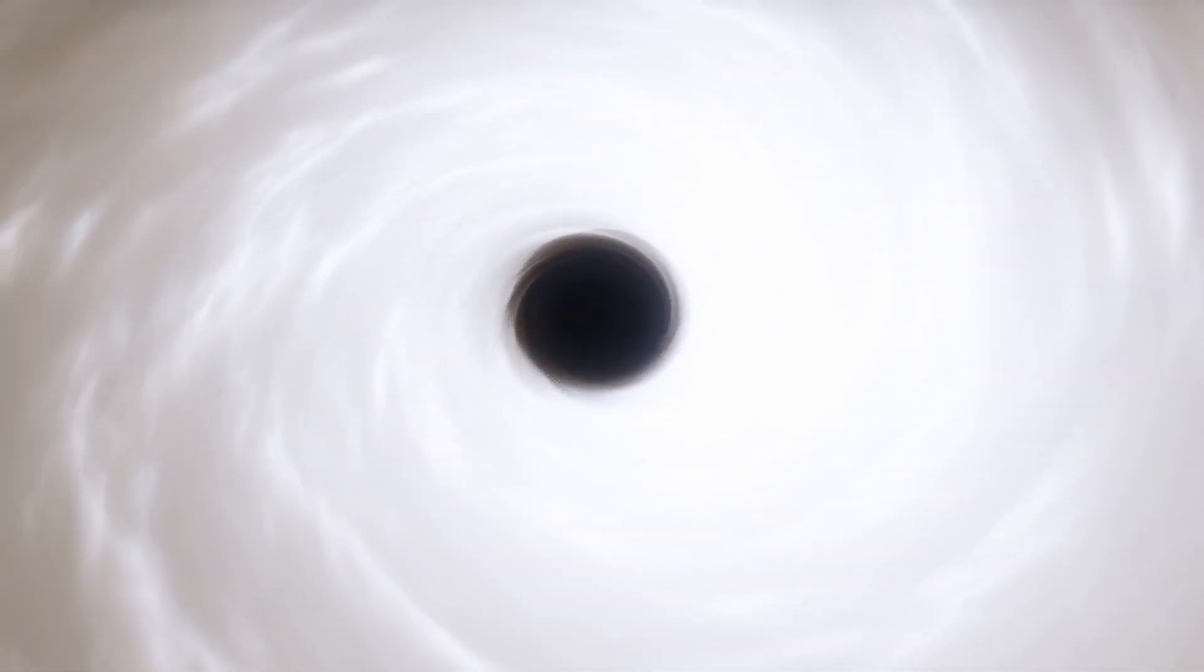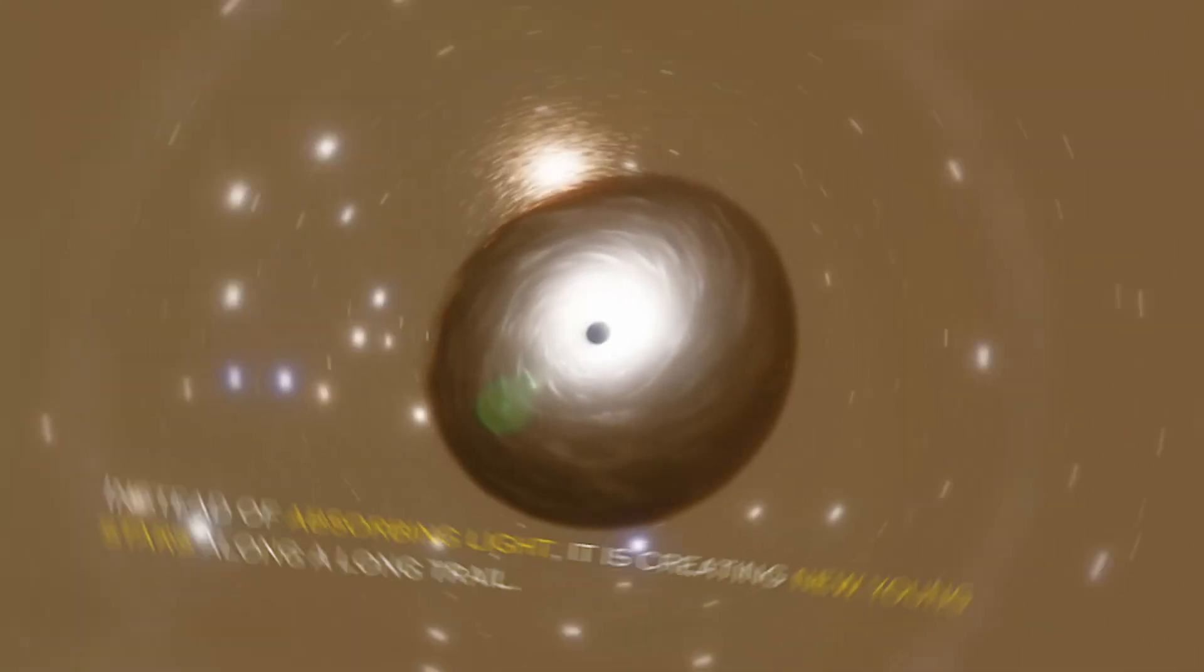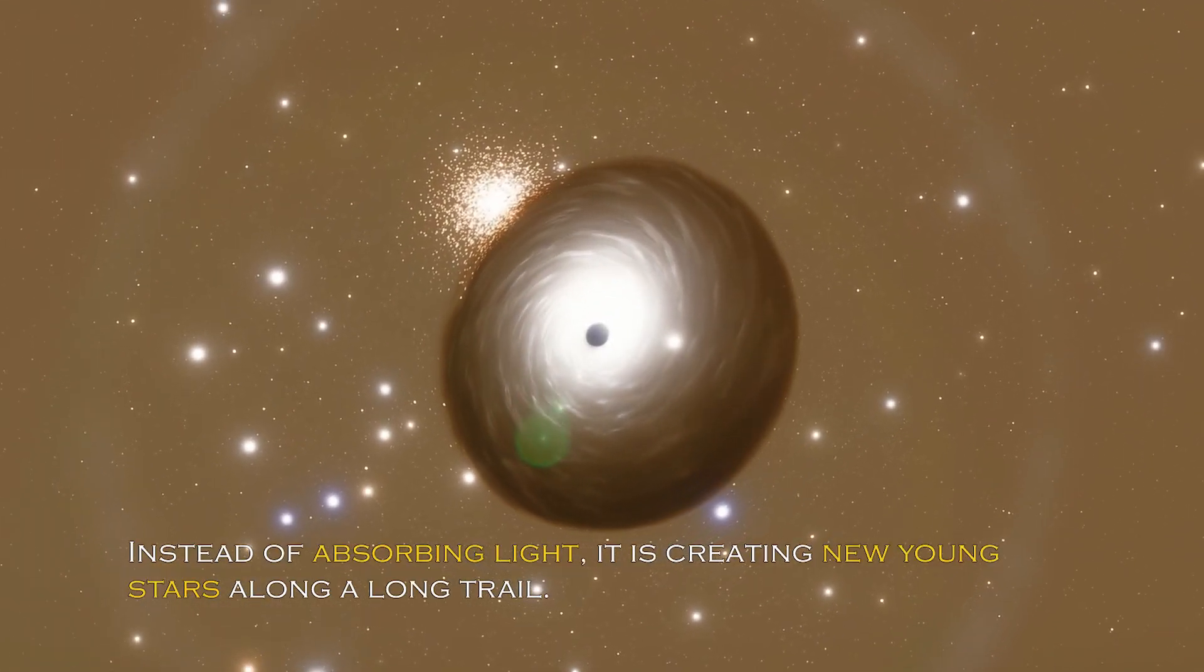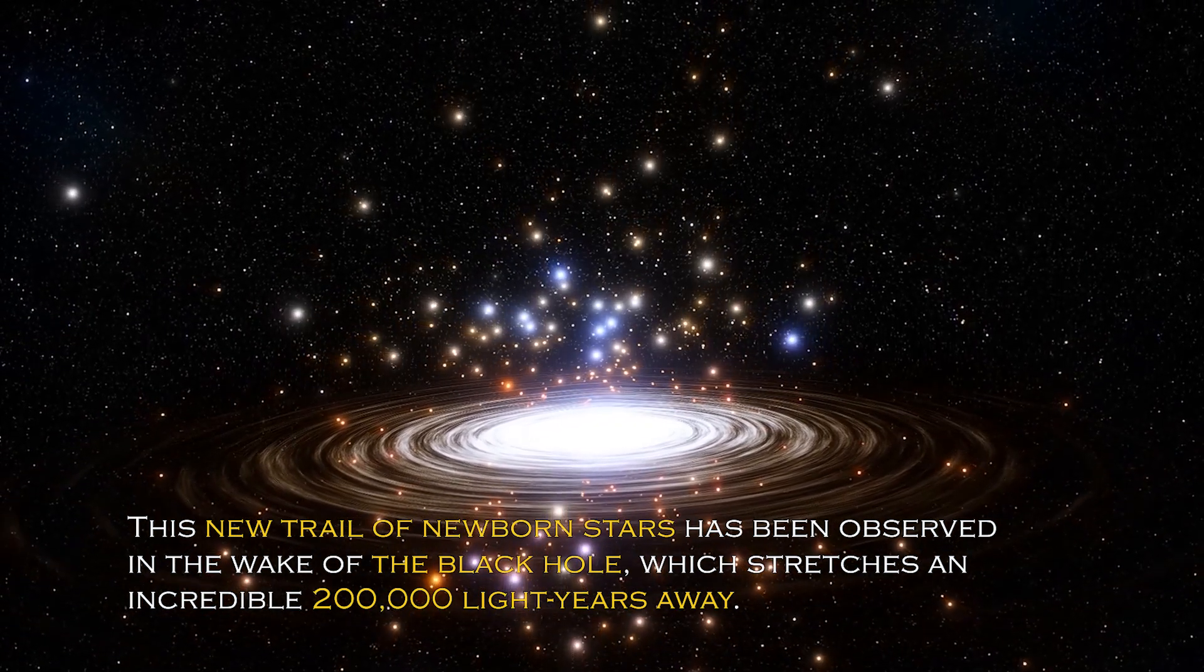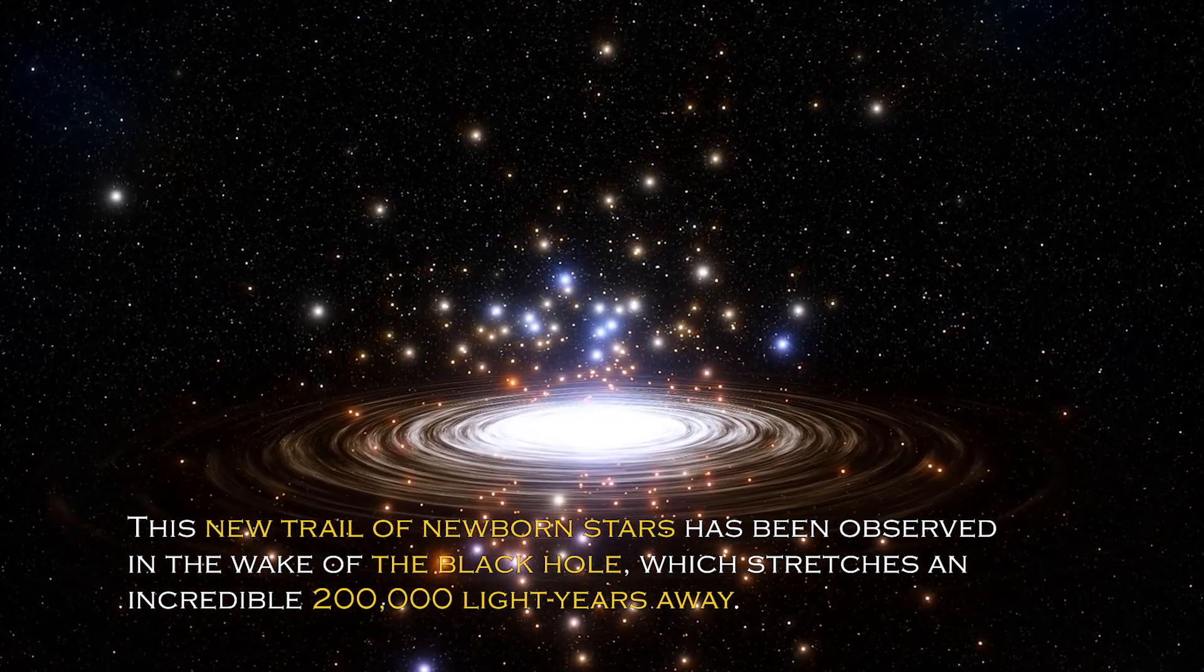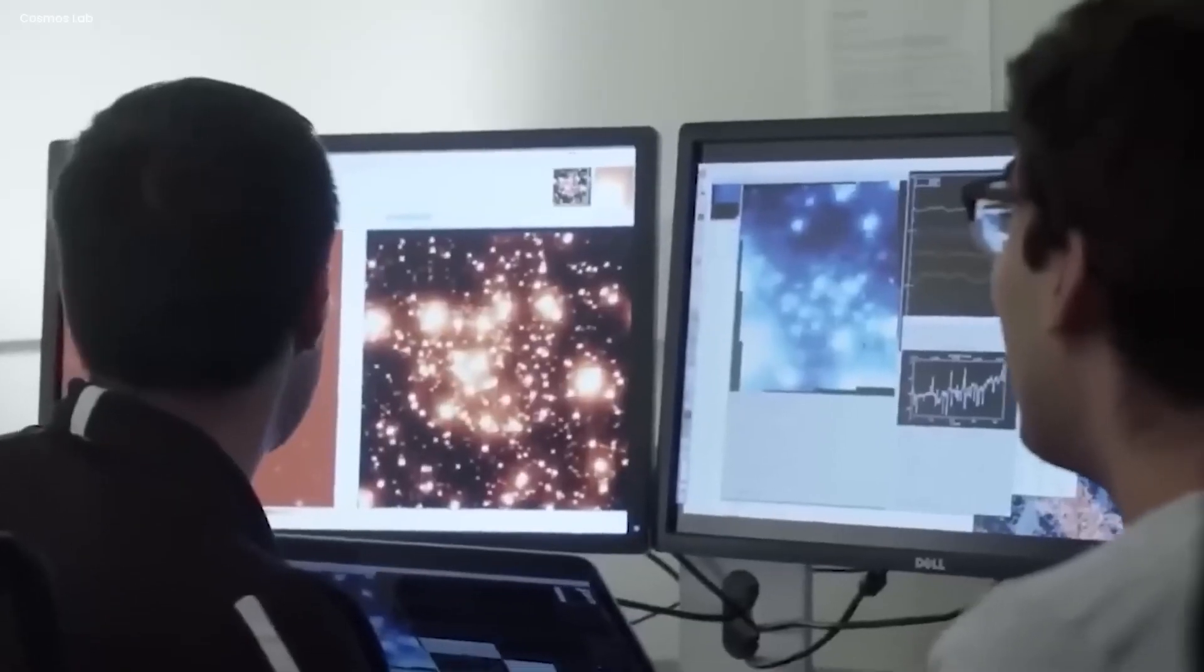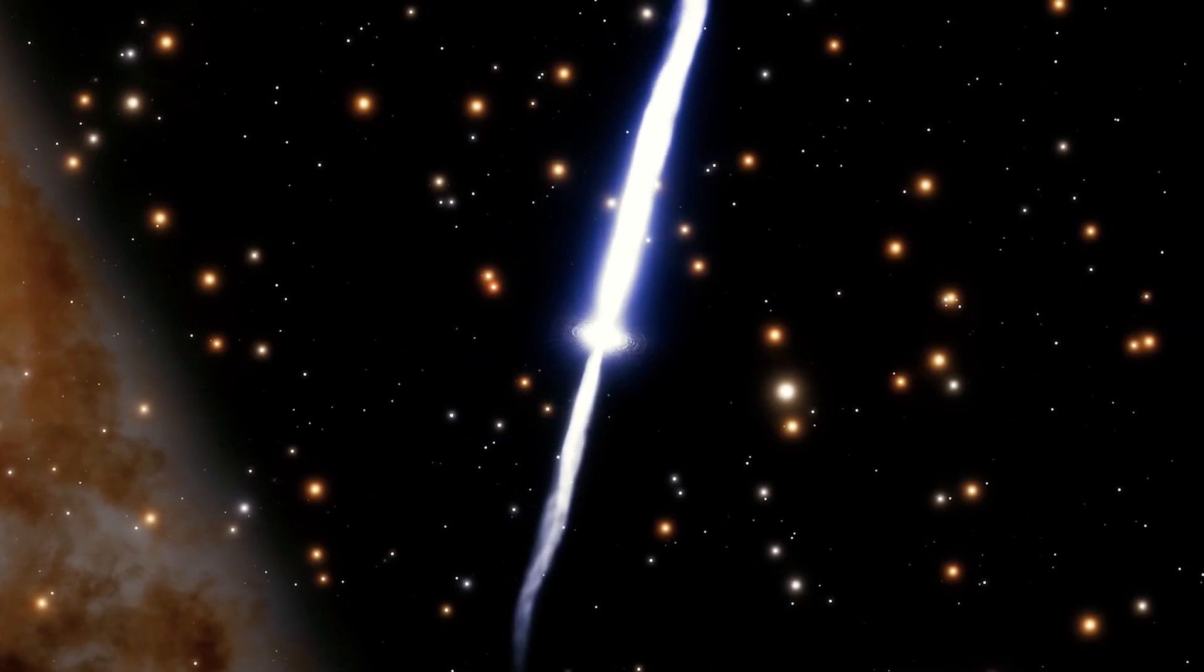Black holes are generally thought of as huge entities that pull everything including light towards them, but the recently observed black hole appears to be having the opposite effect. Instead of absorbing light, it is creating new young stars along a long trail. This new trail of newborn stars has been observed in the wake of the black hole, which stretches an incredible 200,000 light years away.